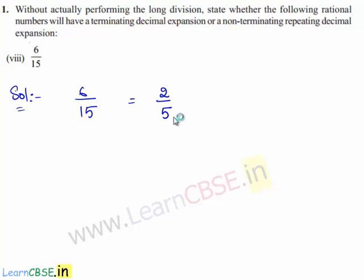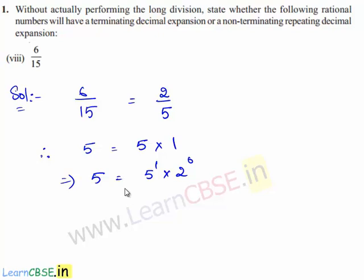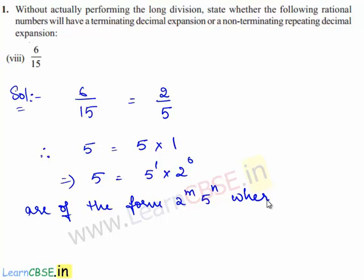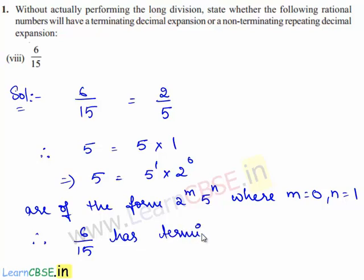Now, in the obtained rational number 2 by 5, the denominator 5 is a prime number. Therefore, 5 can be written as 5^1 times 2^0. Therefore, the factors of the denominator are of the form 2^m times 5^n, where m = 0 and n = 1. Therefore, the given rational number 6 by 15 has a terminating decimal expansion.